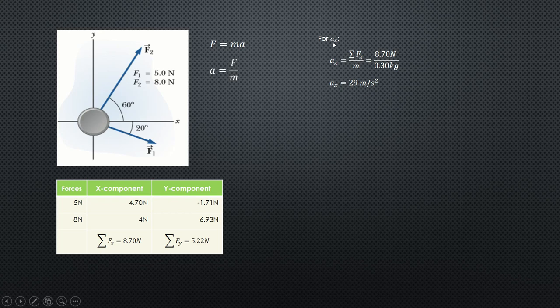For the acceleration along x, based on the formula, acceleration will equal force. Acceleration along x should use the force along x, so that's summation of force along x, given as 8.70, and its mass is 0.3 kilograms. You will get an acceleration of 29 meters per second squared along x.